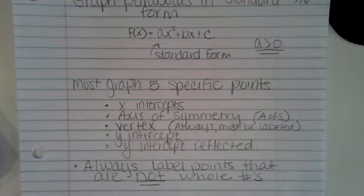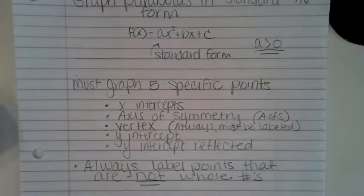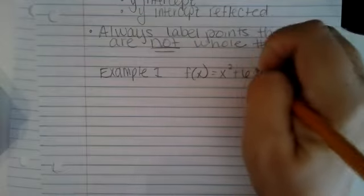It doesn't matter if you're in standard form, intercept form, or whatever form — these are the five things you have to graph. Today we are going to concentrate on graphing from standard form: what my graph is going to look like and how to find all of these items. We're going to start with example one. F of x is equal to x squared plus 6x plus 5.